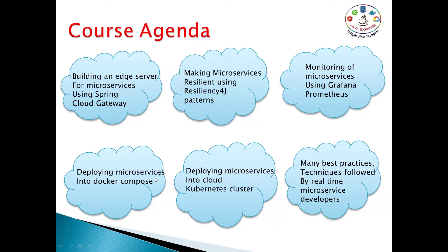Before deploying to the cloud, we'll understand deploying microservices using Docker Compose as a multi-container system. With plain Docker you run one container at a time; Docker Compose lets you automate running multiple containers. We'll cover building Docker images, running them locally, and then deploying to Kubernetes. Best practices, DTO patterns, and Git repo practices will also be discussed as part of the real-time project.